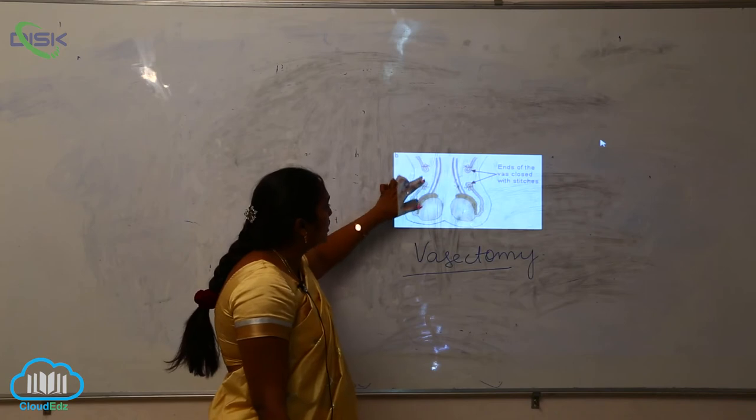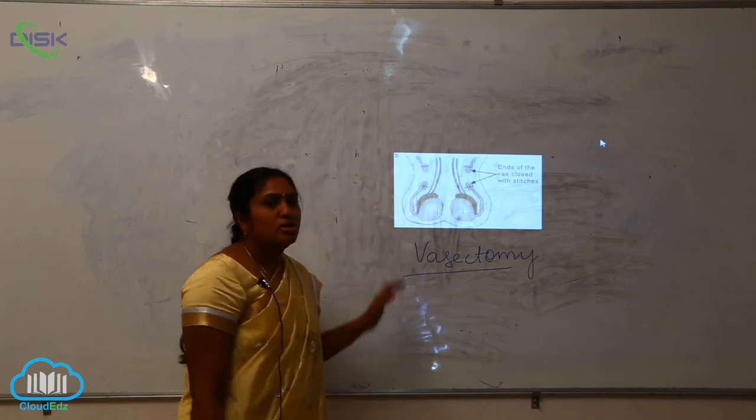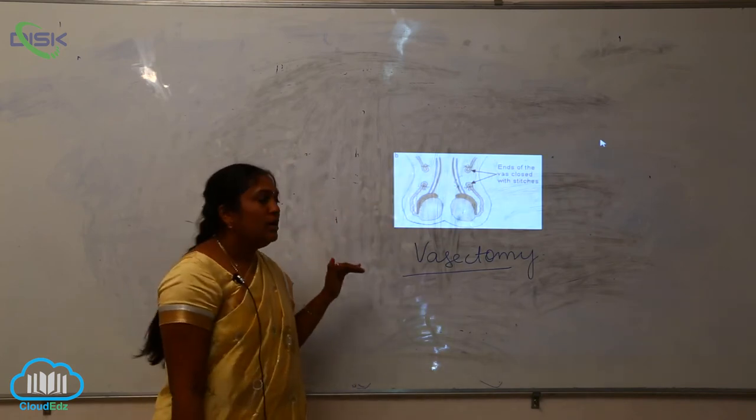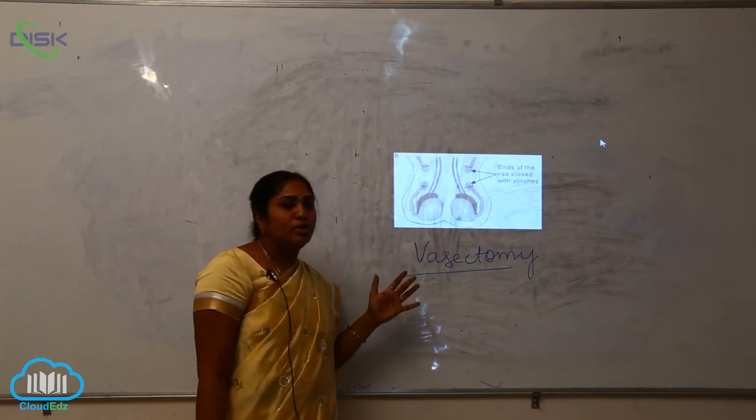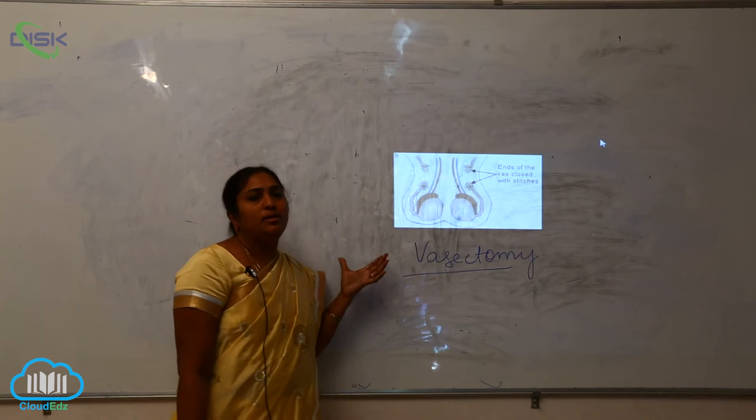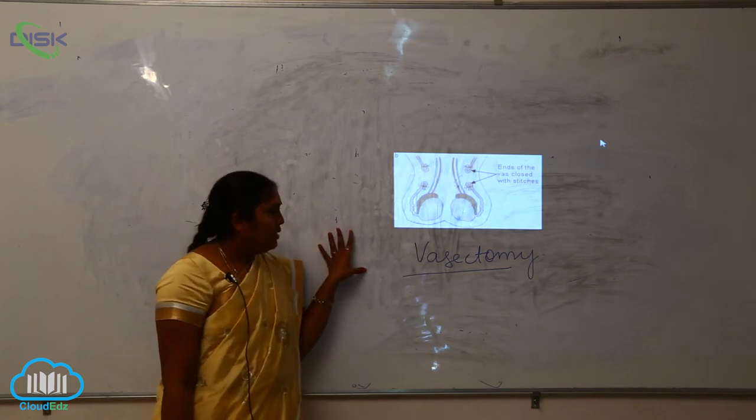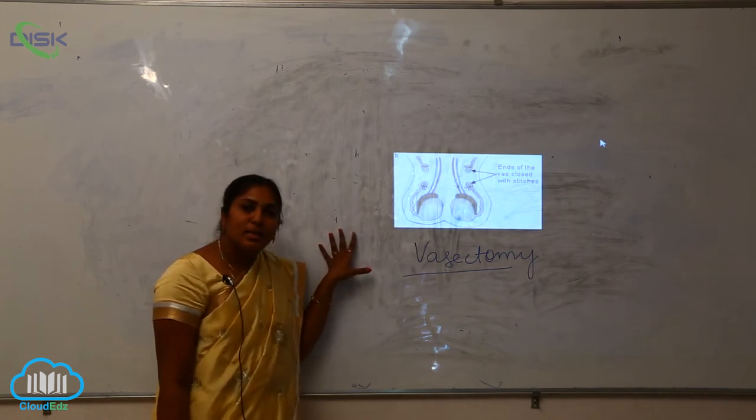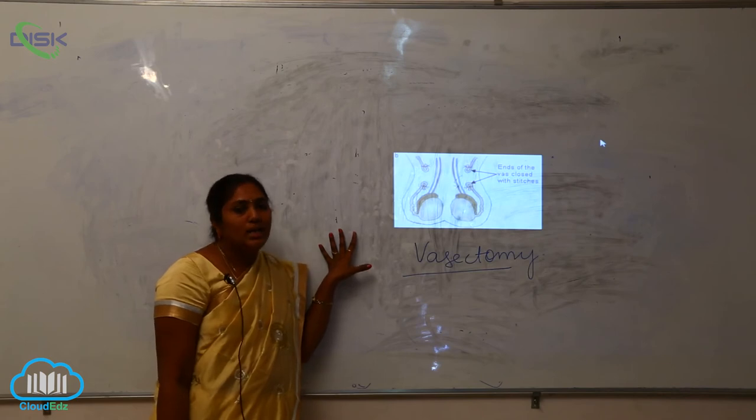The ends of the vas are closed with stitches so that no further traveling of the sperm will be seen. Thus we can control the birth rate. This is what is called vasectomy, and it is highly popular in India.